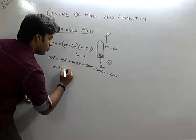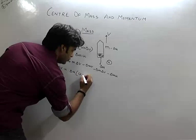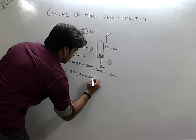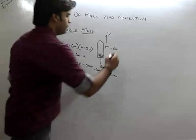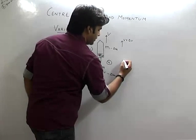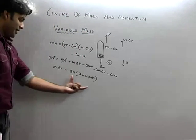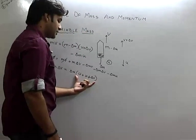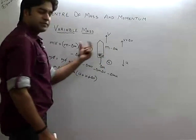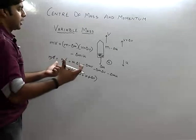After cancelling M·V from both sides, we get M·delta V equals delta M times (U plus V plus delta V). Here V plus delta V is in the upper direction and U is in the lower direction. So M·delta V = delta M times (U plus V plus delta V), which is the velocity of gases with respect to the rocket.